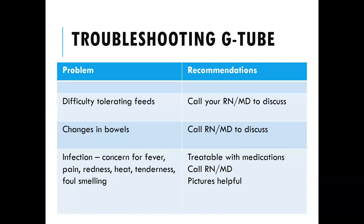Infection is something many people worry about. We have seen it and it can occur, but it can be treated with antibiotics. Signs to look for include redness and tenderness — common right after placement while healing — but if the pain, redness, and tenderness are getting worse, or if you develop a fever and different discharge from the site, those are red flags for possible infection. Contact your nurse or provider promptly, and pictures are welcome as they help us assess what's going on.